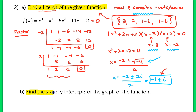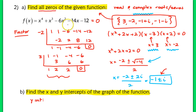Now in part B, we're asked to find the x and y intercepts of the graph of the function. This question is similar to part A, but not exactly the same — let's make sure we understand the difference between a zero and an intercept. The y-intercept is pretty easy: if we plug in 0 for x, all terms drop out and leave me with negative 12. So I have a y-intercept at (0, negative 12). Make sure you list both coordinates — it's not just negative 12.